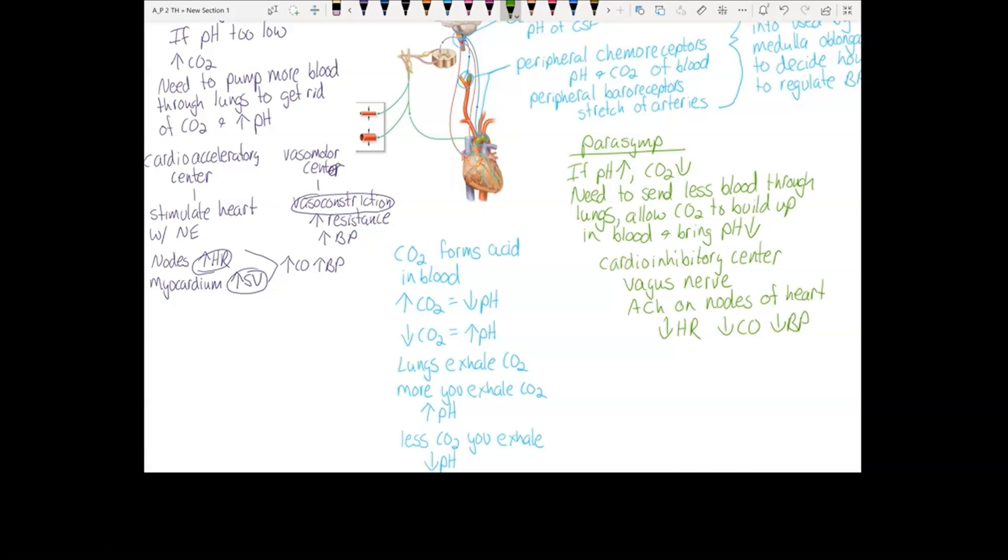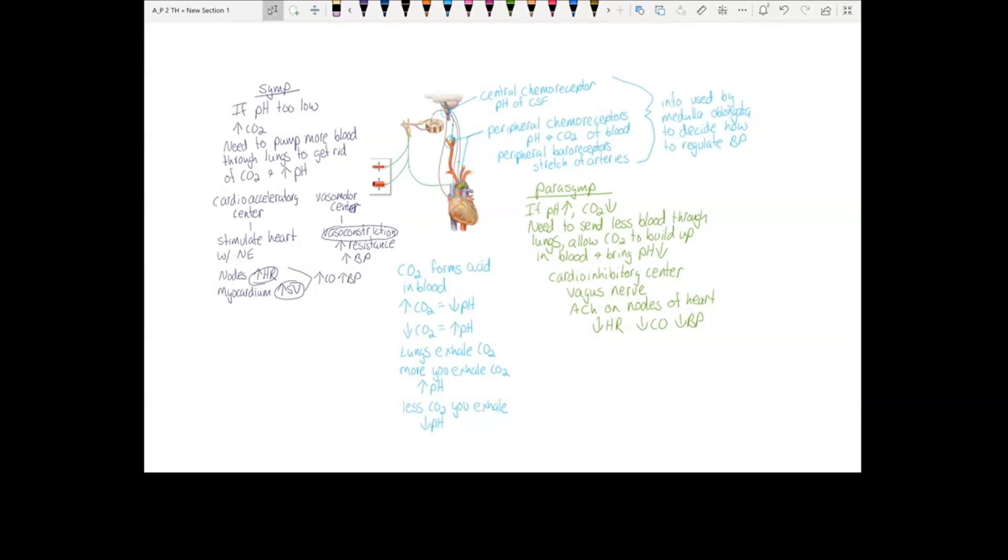So this is your nervous regulation of blood pressure. It's the medulla oblongata using sympathetic and parasympathetic stimulation to alter cardiac output and resistance in the blood vessels.